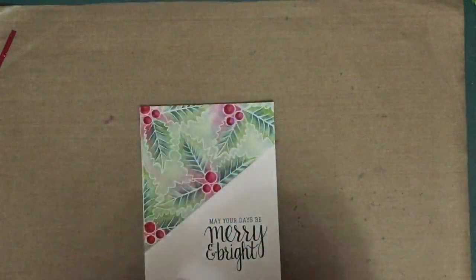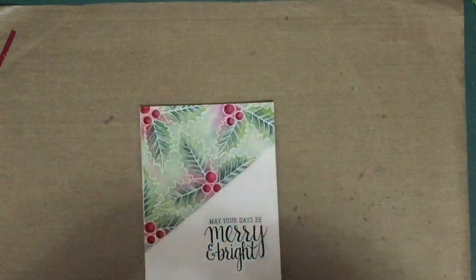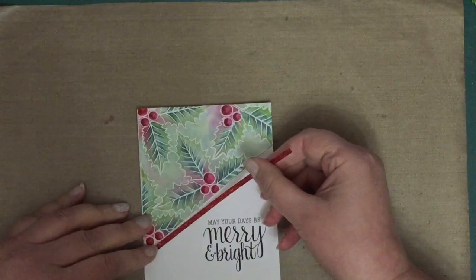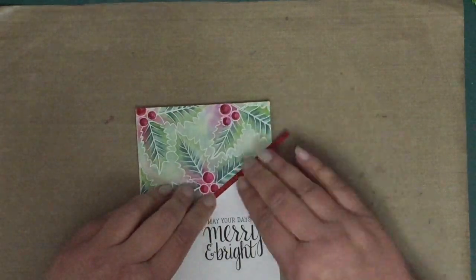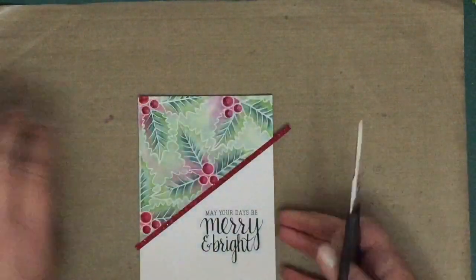Then I'm going to use some Tombow Mono Multi glue just in a little thin strip to add the red glimmer paper. And that's pretty much it. I'm just gonna stick that down, cut off the edges, and that's it.